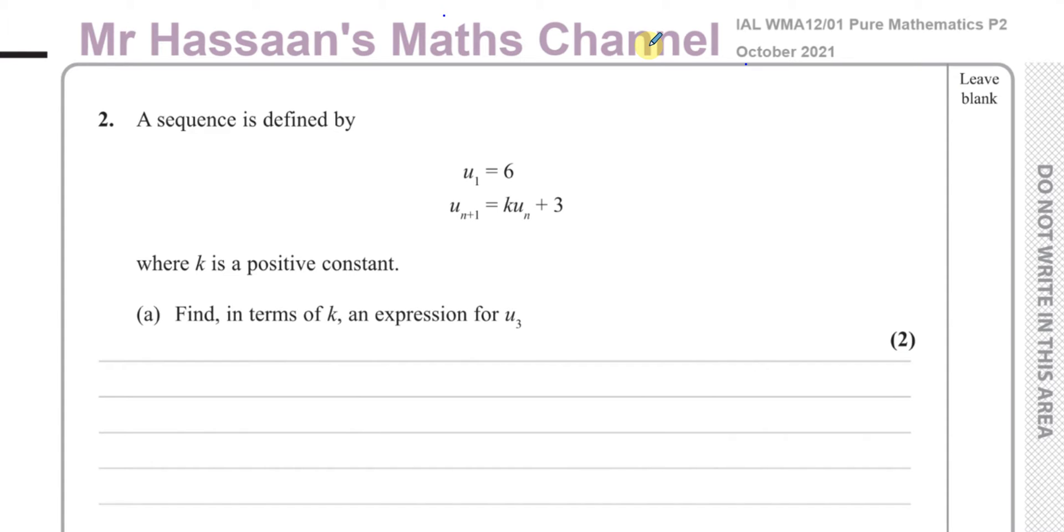It says a sequence is defined by U1 equals 6, U(n+1) equals K*Un plus 3, where K is a positive constant.